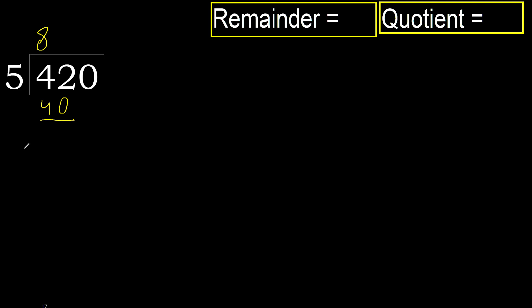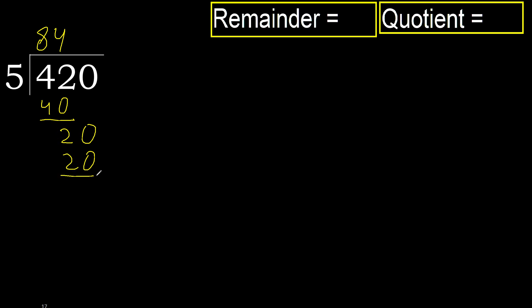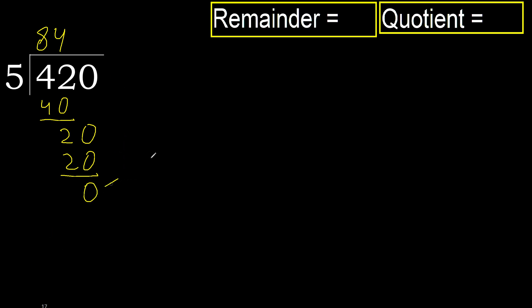42 minus 40 is 2. Next, bring down: 20. 5 multiplied by 4 is 20 — 20 is not greater. 20 minus 20 is 0. Next — that is not a number, therefore finish it.